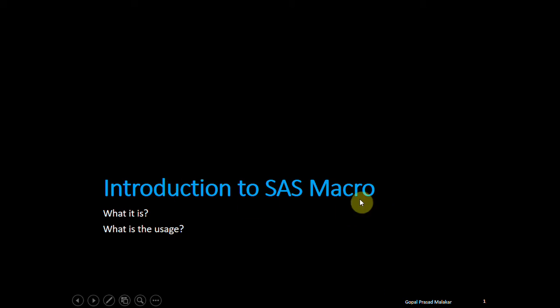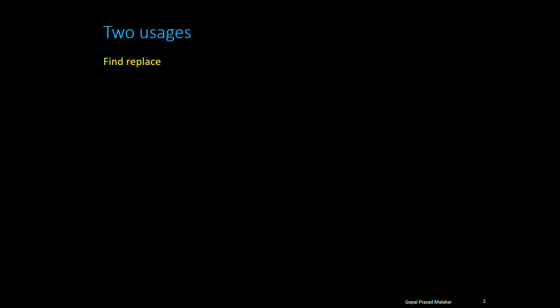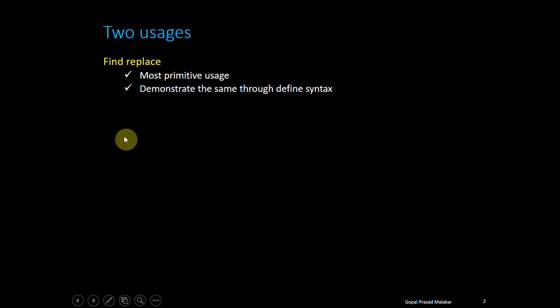Let me talk about what a SAS macro is and its usage. SAS macros are used for two purposes. The most primitive use is find and replace. If you have to make changes ten times in the code, you define it at one time and change it there so that it reflects into all other sections of the code. I'll demonstrate that when I explain the SAS syntax and show you how to debug it.